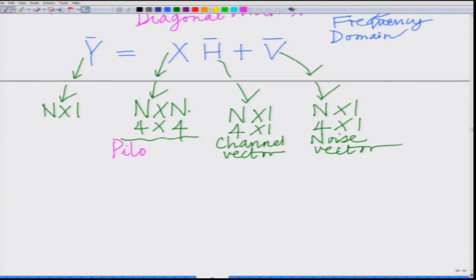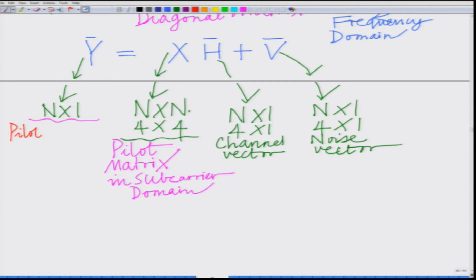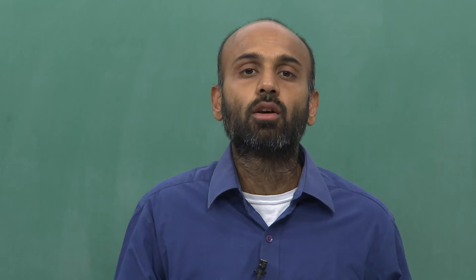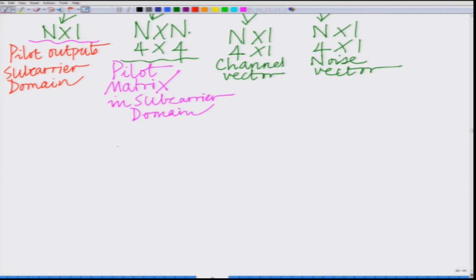You can think of h_bar as your channel vector in the frequency domain, and the diagonal matrix X as the pilot matrix in the subcarrier domain. If you are transmitting pilot symbols onto the subcarriers, this is the pilot matrix in the subcarrier domain, and y_bar represents the received pilot outputs in the subcarrier domain for channel estimation. We are considering capital X0, X1, X2, X3 to be the N pilots loaded onto the N subcarriers.